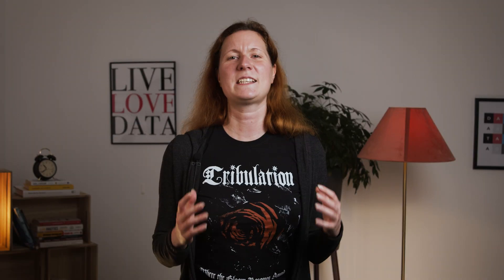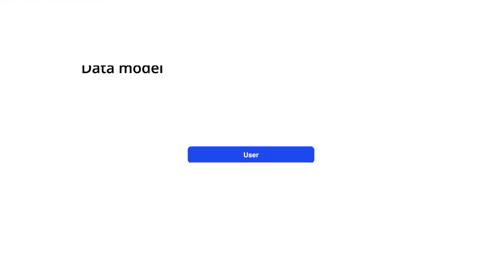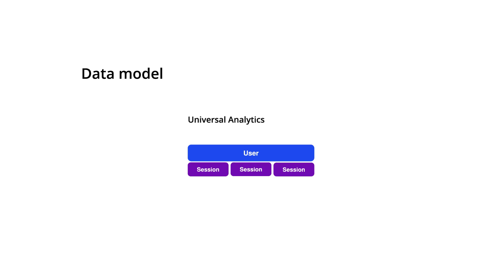It starts with a data model — meaning how GA collects the data. Universal Analytics is known for its layered user-session-hit model. The first layer is the user, which is technically a browser marked by the GA cookie that is set. The second layer is the sessions that each user had. And finally, we have the so-called hits, which represent all the actions on a website, like a page view or a button click. This data model makes total sense once you wrap your head around it.